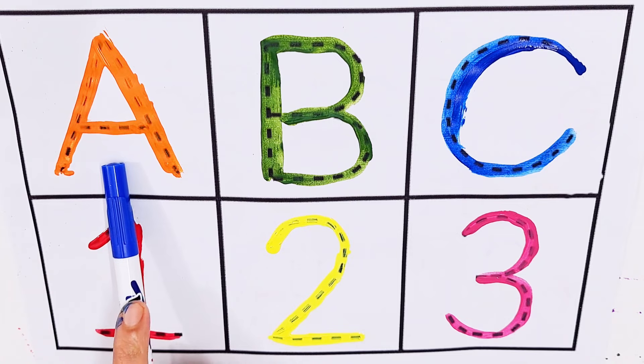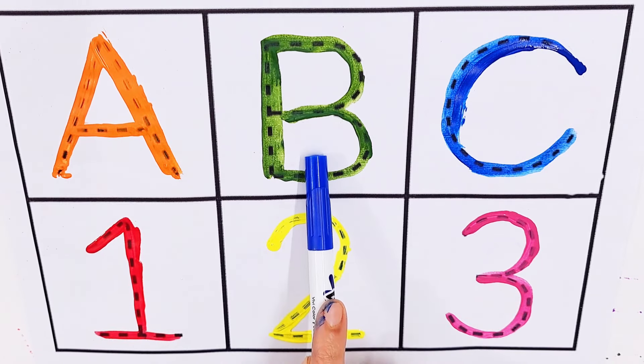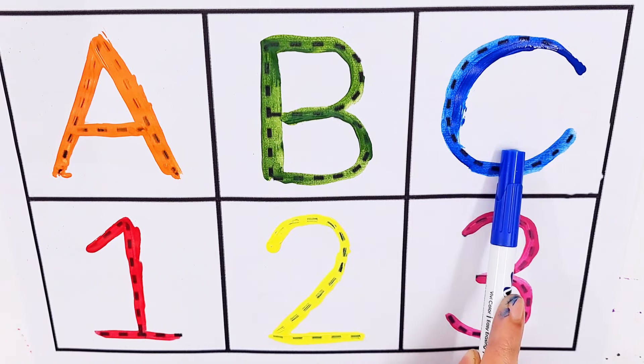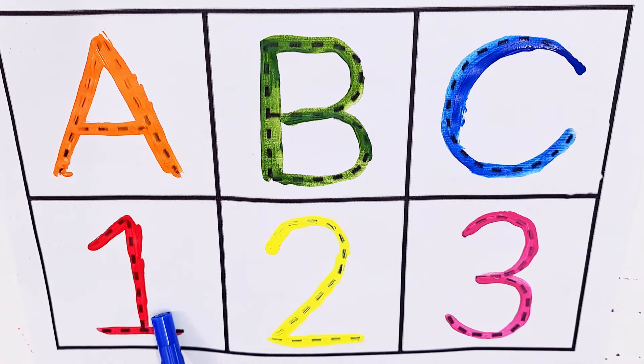A, A for avocado. B, B for bus. C, C for candy. Number one, number two, number three.